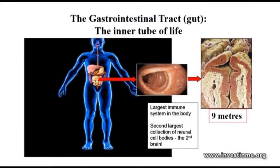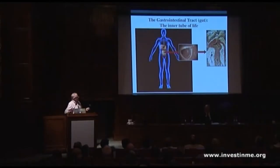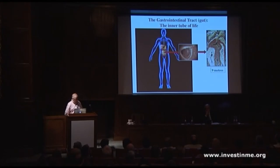The gut is really the inner tube of life — it's absolutely essential for life. This is an endoscopic image showing what the gut looks like: these folds and ridges. Going into even more detail, there are finger-like projections called villi that protrude into the lumen, which allow nutrient uptake and provide a barrier function. It's about nine meters long — an incredibly long organ. What's probably not appreciated enough is that it actually contains the largest immune system in the body, and it produces by far the largest amount of antibody, primarily IgA.